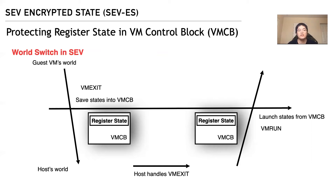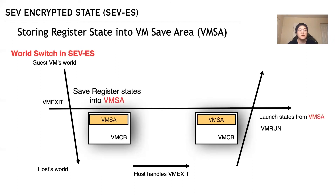In SEV, when there is a world switch from the guest VM to the host during a VM exit, the register states are saved unencrypted in the VMCB. In SEV-ES, register states are saved encrypted in an area called the VM Save Area, VMSA. The hardware also restricts the hypervisor's write access to the VMSA during VM exit.